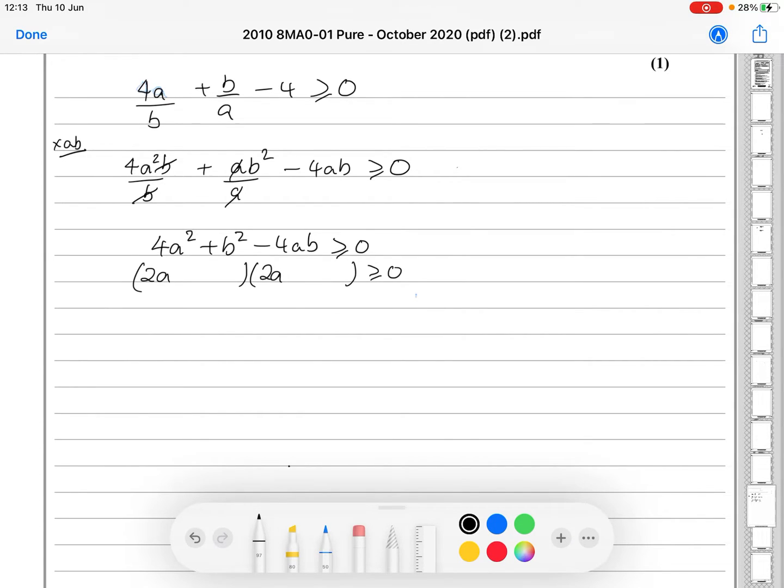So, 2a and 2a, b and b, would that work? Minus times minus gives a plus. That becomes minus 2ab minus another 2ab. So, yes, I think we've got it. That is that done.